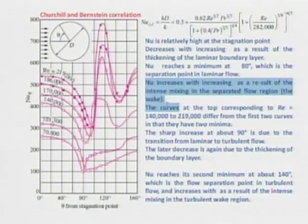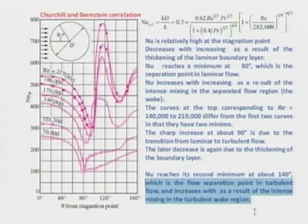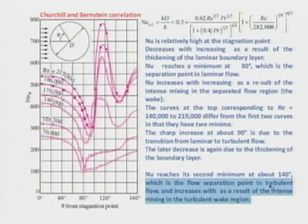See here and again here also. What is this wake region? After the flow is separated, there is a good mixing in the region there, and that is called the wake region. There, because of good mixing, heat transfer coefficient increases. Whenever there is good mixing, be it turbulence or due to separation, you are going to have an increase in heat transfer coefficient.